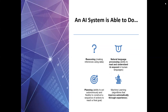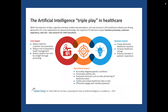An AI system is able to do reasoning, natural language processing — the ability to read, understand, and respond in human language — and planning, which is the ability to act autonomously and construct a sequence of actions to reach a final goal. It also provides machine learning with algorithms that improve automatically through experience. AI has cost impact, operational impact, and business impact in healthcare, creating distinctive solutions and increasing savings.